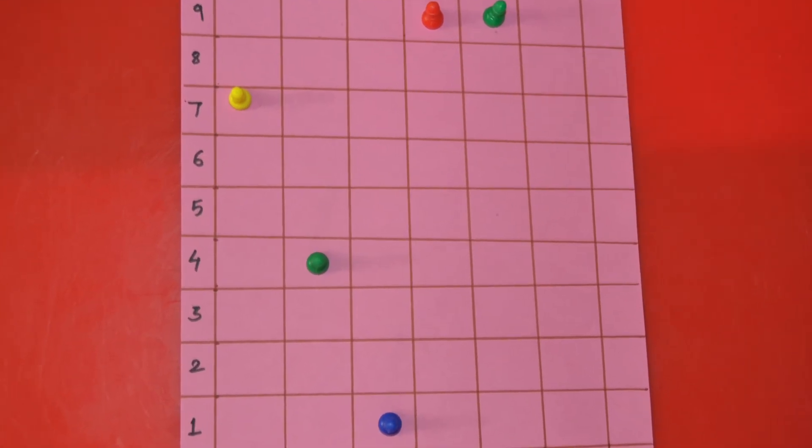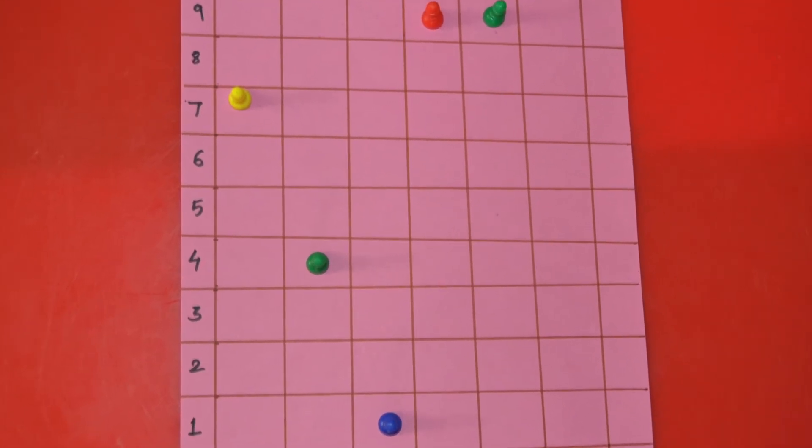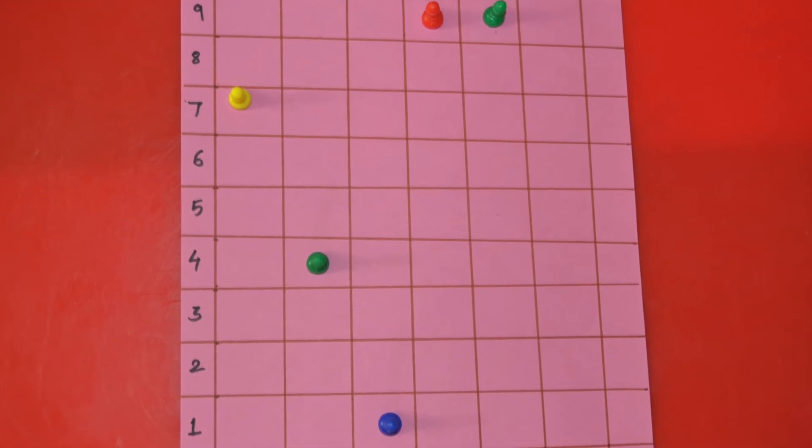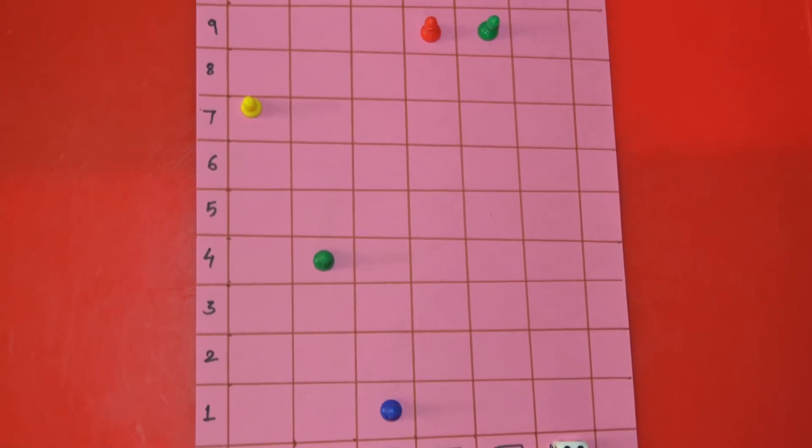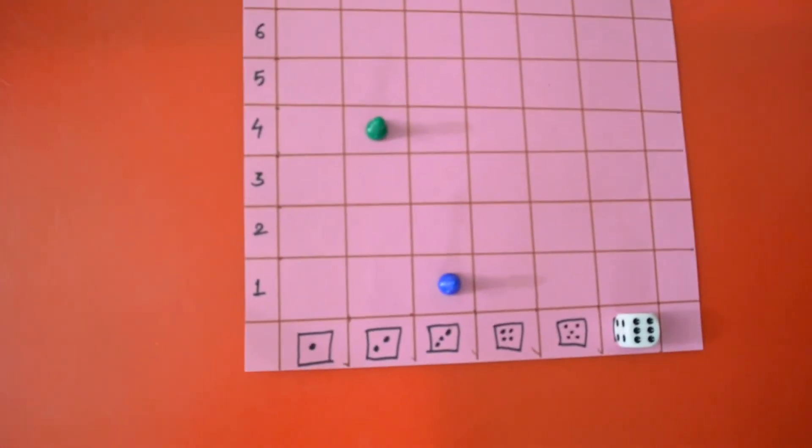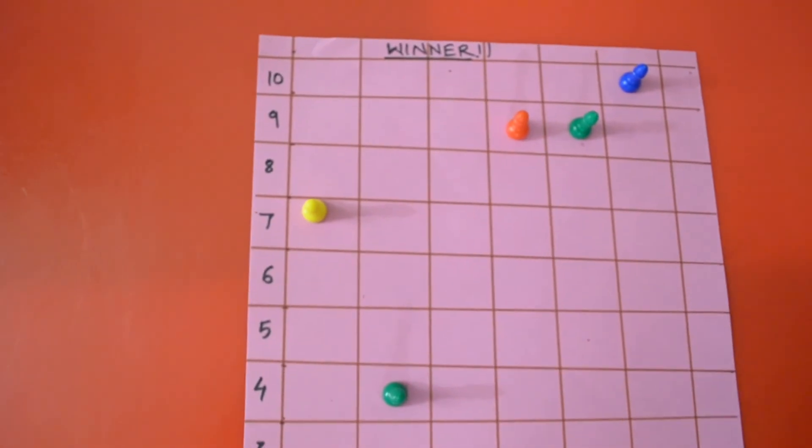Besides this counting, matching, and having fun in the game, kids learn here a new concept which is ordinal number. So what is this ordinal number? It means putting things in a sequence. It means who stands at what place, that is first, second, or third, and that is the ordinal number.